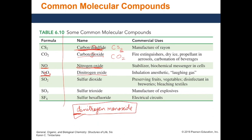Let's try SF6. Sulfur — one, so no prefix. Fluorine — there are six, so the prefix is 'hexa'. Fluorine turns into 'fluoride'. The name is 'sulfur hexafluoride'. For the reverse: sulfur = S, fluoride = F, and 'hexa' means six, so the formula is SF6. Naming and writing formulas for molecular compounds is much easier once you know the prefixes.